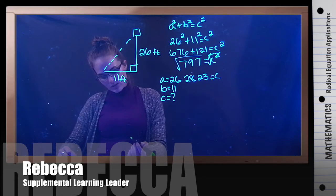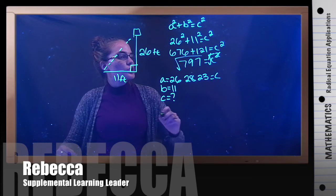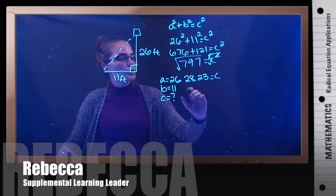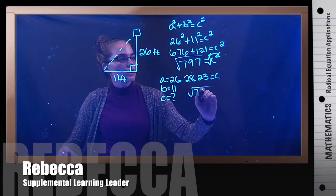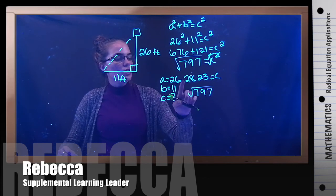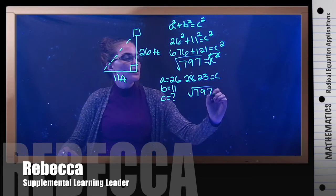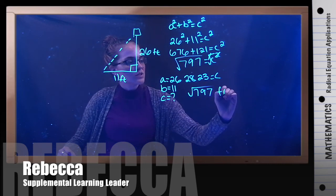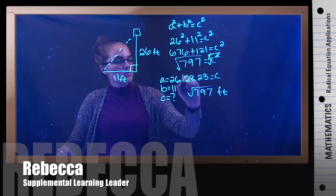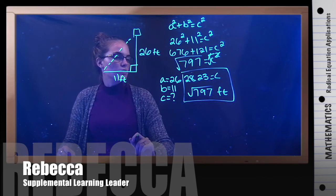It says round to the nearest hundredth and give an exact answer. So our exact answer would be √797 because that was before we put it in the calculator. And rounded to the nearest hundredth would be 28.23. And don't forget units—it needs to be in feet. So the ladder must be 28.23 feet long.